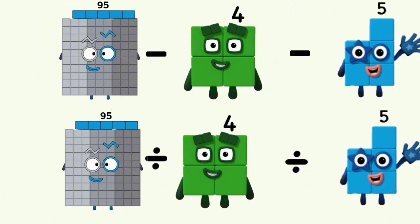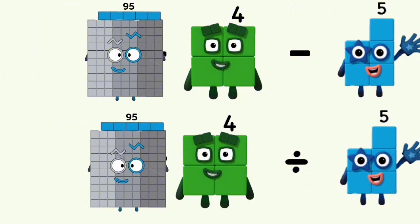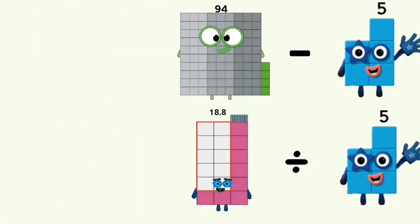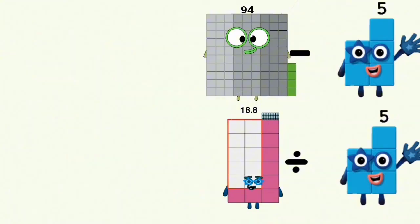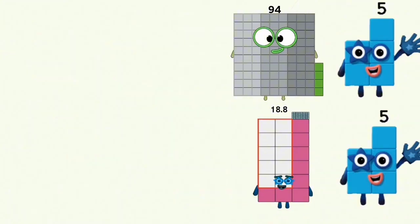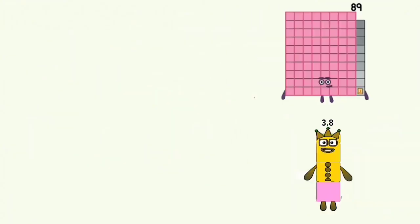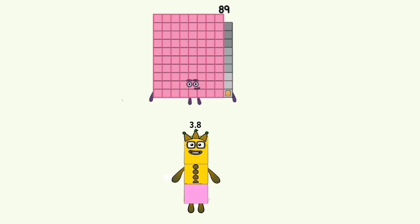95 minus and divided by 4 equals 94 and 18.8. 94 minus 5 and 18.8 divided by 5 equals 89 and 3.8.